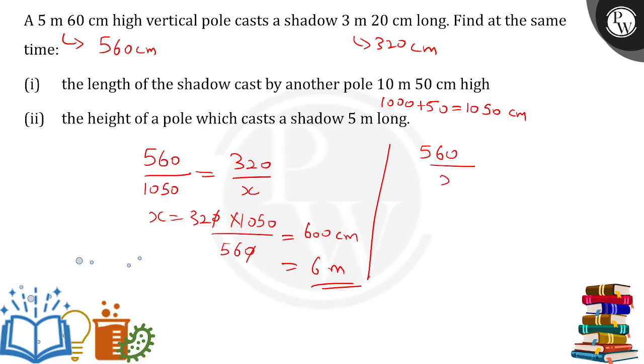Height of the pole. This time the height of the pole is being asked. So in that case, the shadow cast was 320, and this time they have given us 5 meter, that means 500.